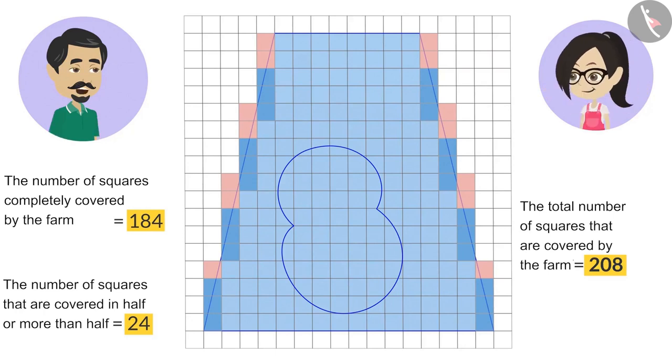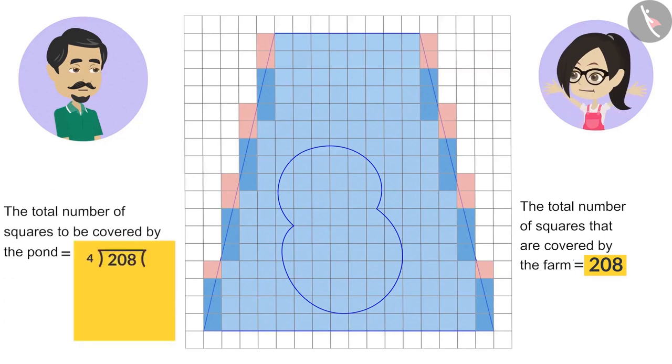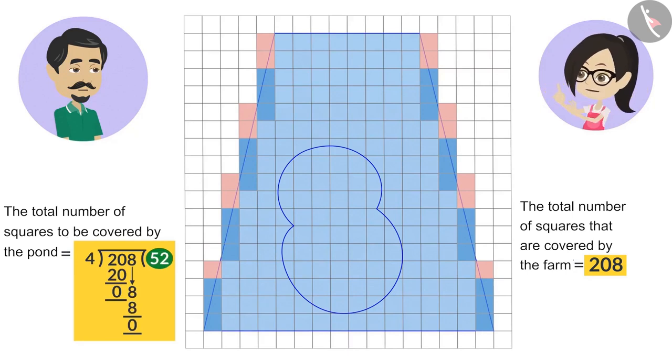It looks like this. Now, you want the pond to be built in one-fourth of the farm, right? That means, the pond should cover 208 divided by 4 squares. That is, if this pond covers almost 52 squares, then we can say that this pond is one-fourth of the farm.